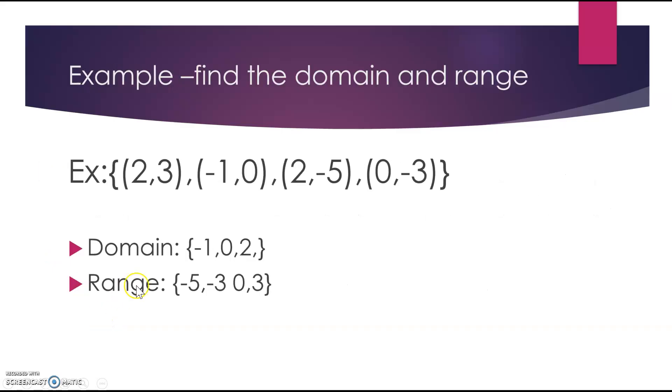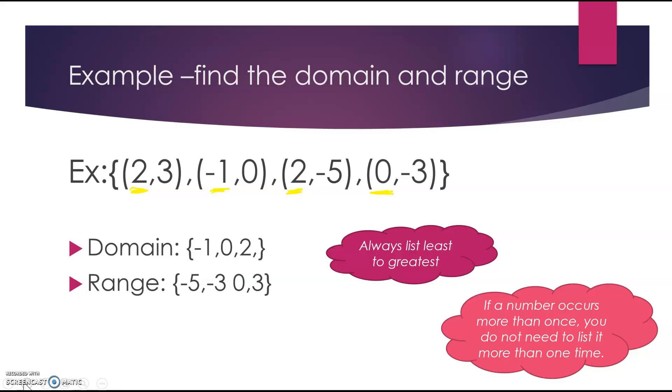So looking at this first example, I have four ordered pairs. When I'm looking for my domain, I'm looking at my x values. So I have 2, negative 1, 2, and 0. Something important to remember is, always list them from least to greatest. And if a number occurs more than once, you do not need to list it more than once. So notice the smallest number I had was negative 1, then 0, and 2. And even though I have 2 listed twice, I don't write it twice in my domain list.